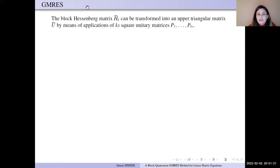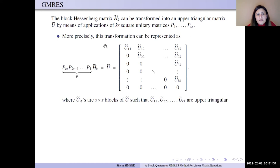So, the block Hessenberg matrices Hk can be transformed into the upper triangular matrices Rk tilde by application of P1 through Pks. This transformation can be expressed with diagonal matrices U tilde 1, 1, U tilde 2, 2 are upper triangular.